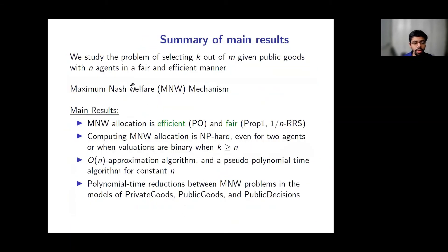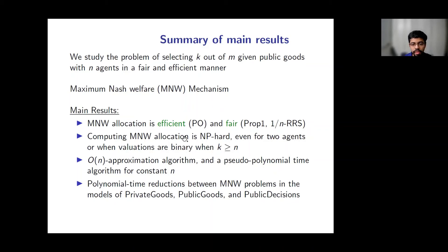To summarize: we study the model of public goods allocation where n agents want to collectively select k out of m public goods fairly and efficiently. The MNW mechanism returns the allocation maximizing the geometric mean of agents' utilities. We show such an allocation is efficient and fair. It is NP-hard to compute even for two agents or binary valuations when k ≥ n. We devise an O(n)-approximation algorithm and a pseudo-polynomial time exact algorithm when the number of agents is constant. Finally, we show the model is intimately connected to private goods and public decision making via polynomial-time reductions between their MNW problems.